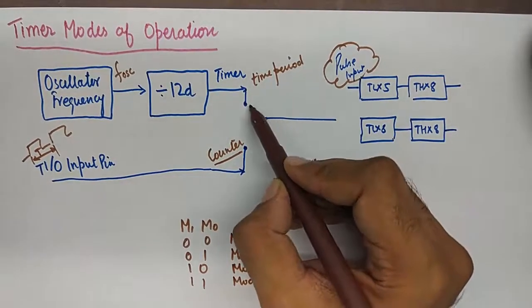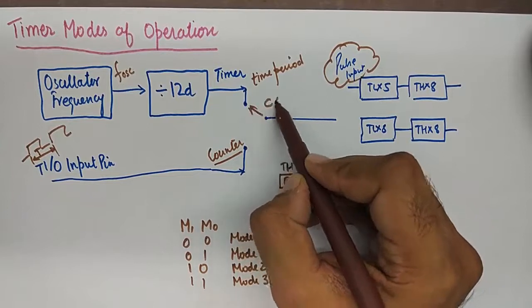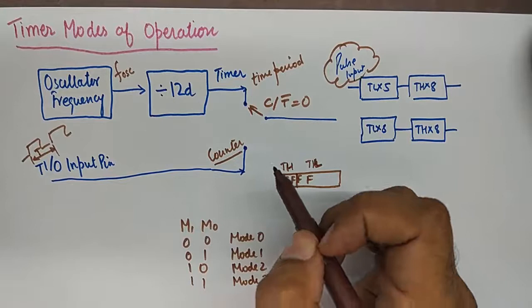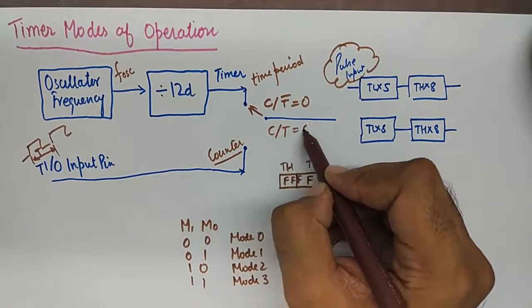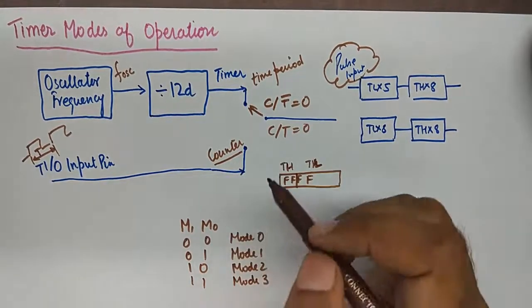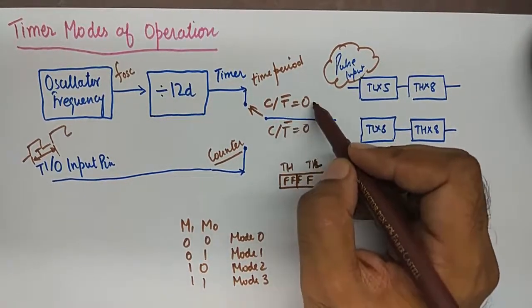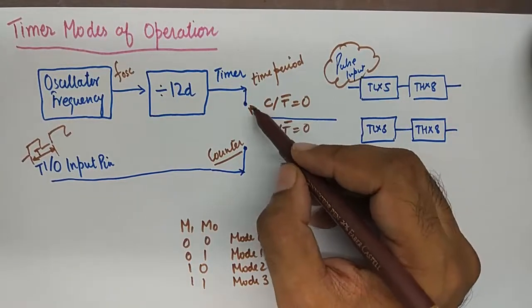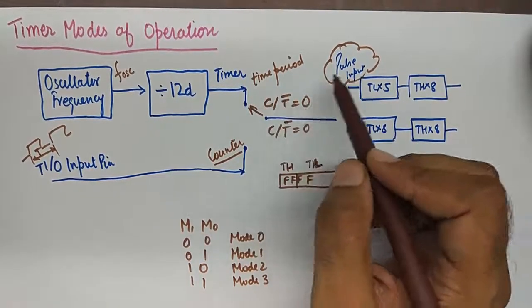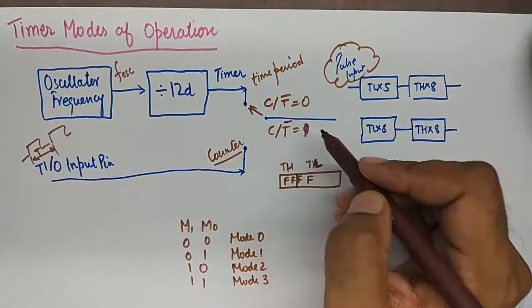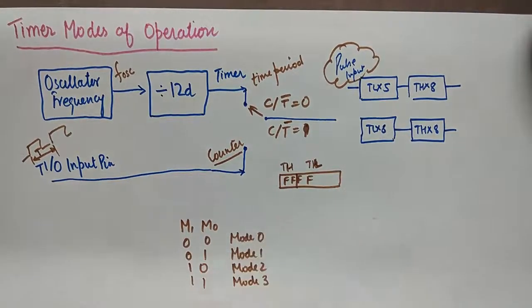And by the way, this switch is selected by C/T bar. If it is a 0, it is timer mode, and if it is a 1, it is the counter mode. A 0 here would suggest that it should take its pulse input from timer, and a 1 here would suggest that it should take its pulse input from counter.